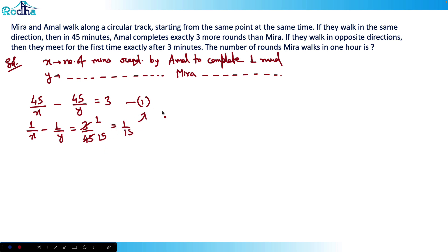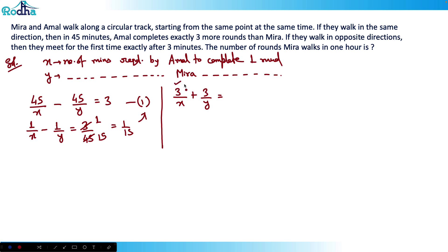For the second condition: if they walk in opposite directions, they meet for the first time exactly after three minutes. In three minutes, the number of rounds completed by Amal is 3/x, and the number of rounds completed by Mira is 3/y. So 3/x + 3/y equals the combined distance, which must equal exactly one full round when they meet for the first time.